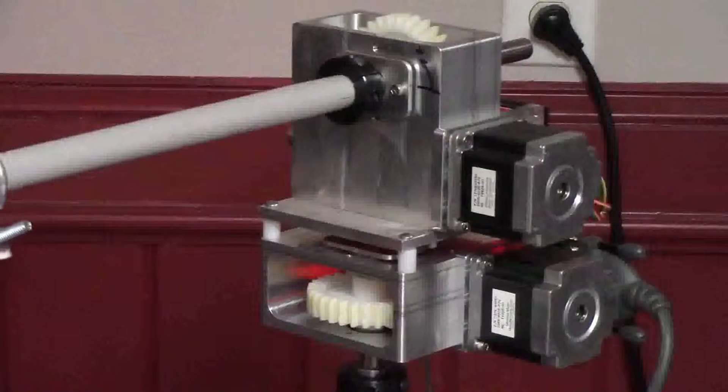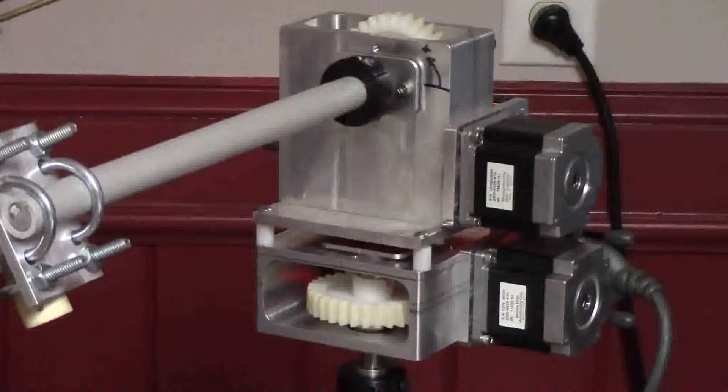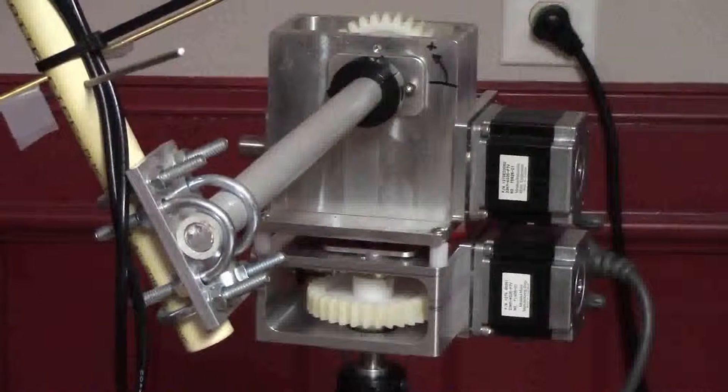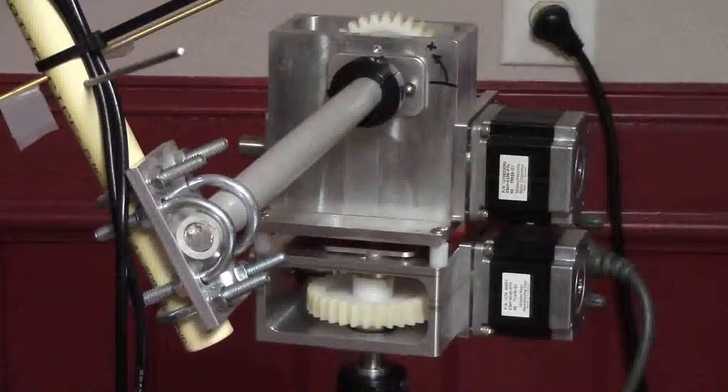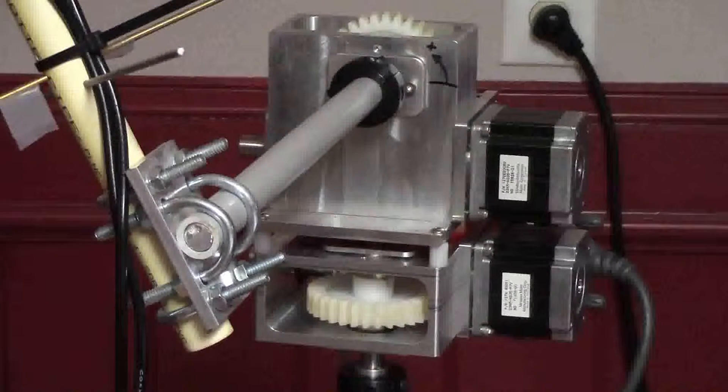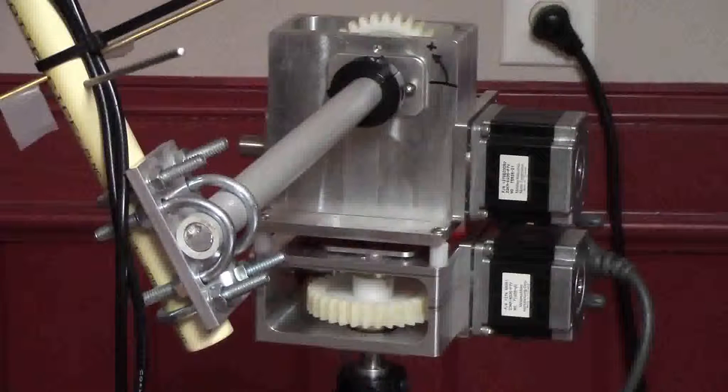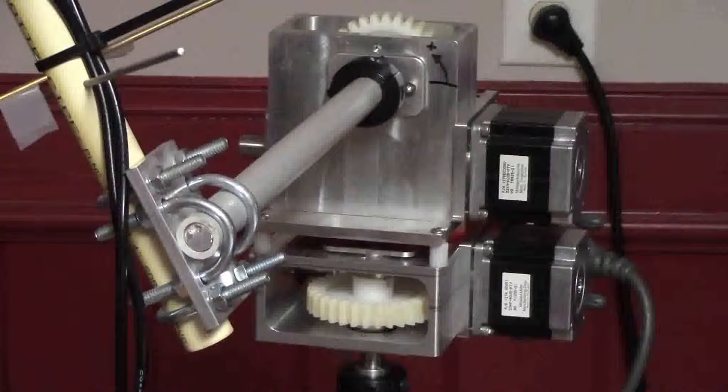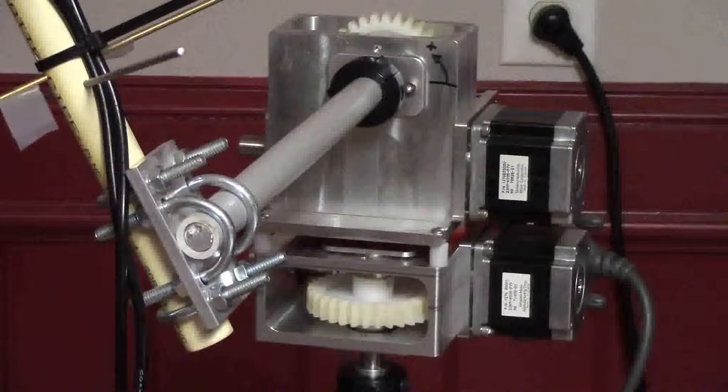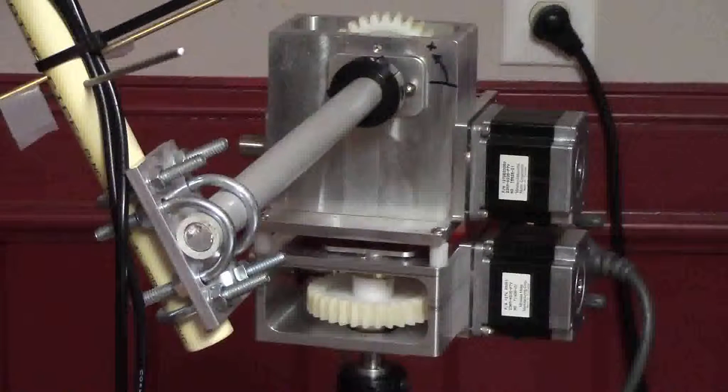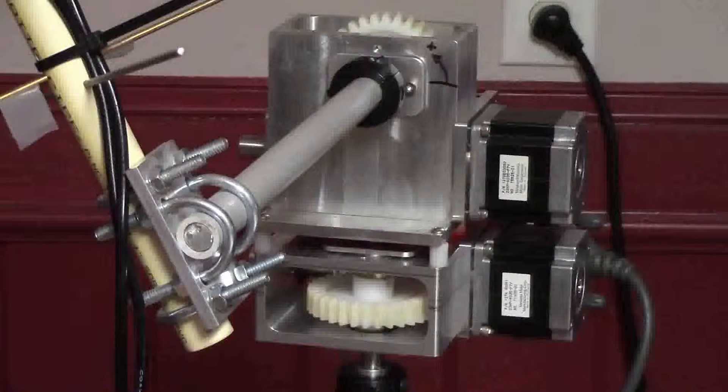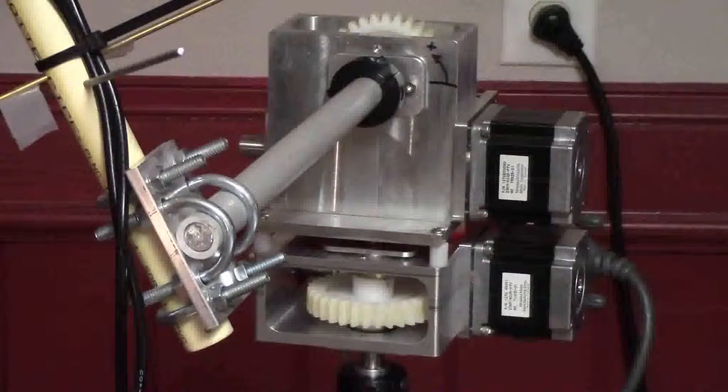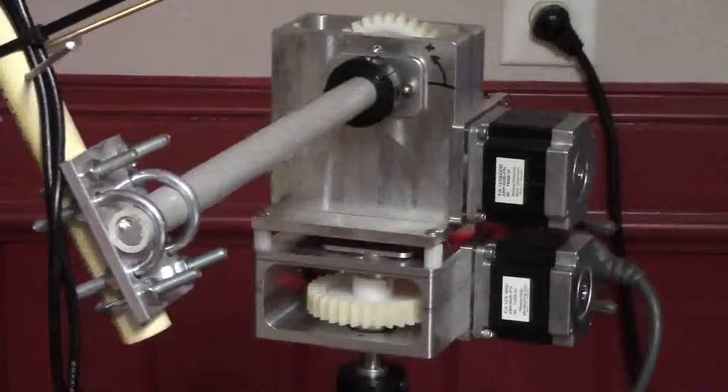Now this is one configuration of the system. There are some things that might be considered. For example, if you note, kind of hard to see, but the two housings here for each axis are actually identical. They're indistinguishable from one another. So what we do is we put in a configuration adapter.